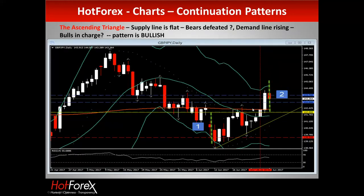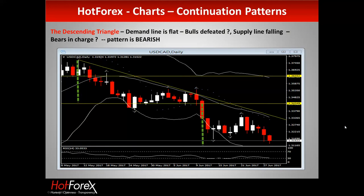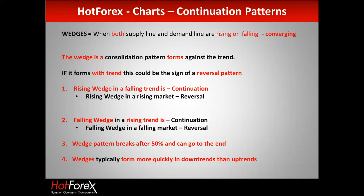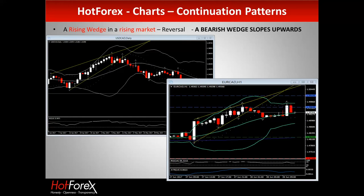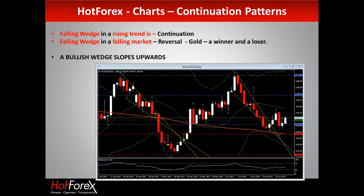Symmetrical, ascending, and descending triangles have different properties, all to do with supply and demand. Ascending is bullish — supply flat, bulls in charge; descending is bearish. Wedges are a bit more complicated — converging supply and demand lines pointing in the same direction — either a continuation or possible reversal. A bearish wedge slopes upwards; a bullish wedge slopes downwards. Use them with a pinch of salt — nothing is 100%.